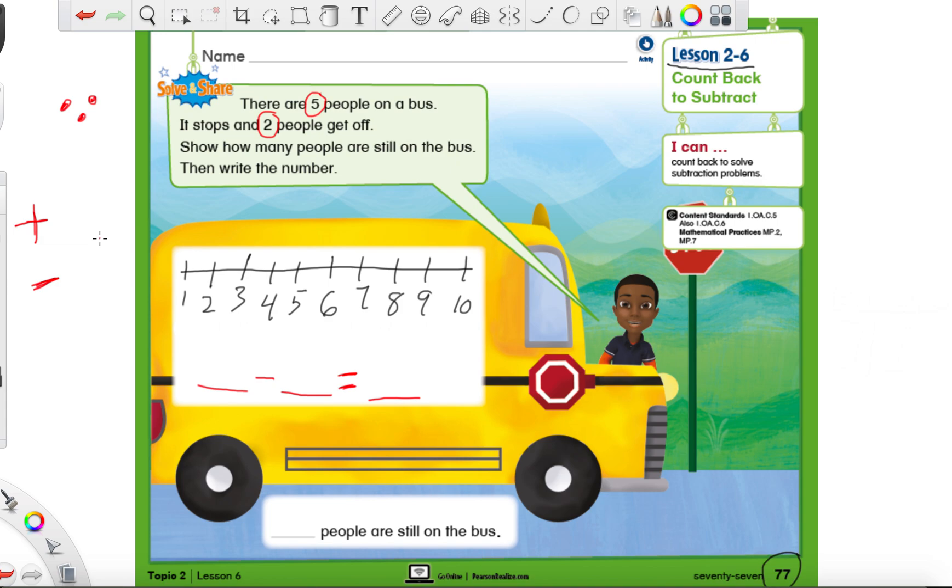So, the first thing we need to do is figure out how to write our number sentence when we're subtracting. The really important thing when we're subtracting is that the biggest number goes first. It's kind of like the opposite of addition. In addition, you have the biggest number at the end. In subtraction, we put it first. So, which is the biggest number? Is it two or five? It's five, right? Because five is further down on the number line. So, five goes first.